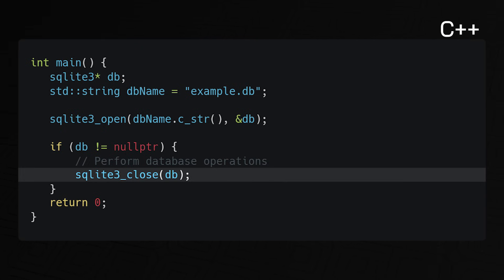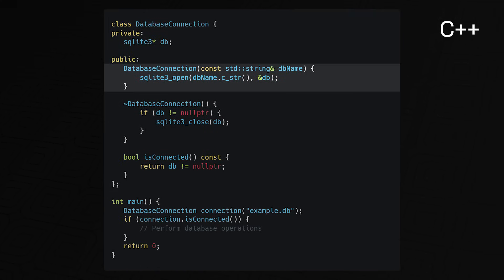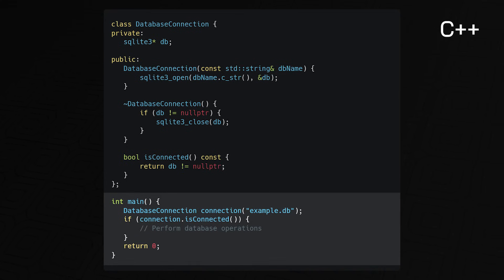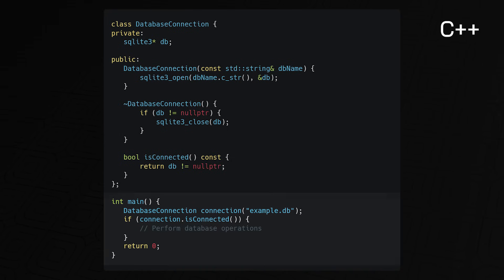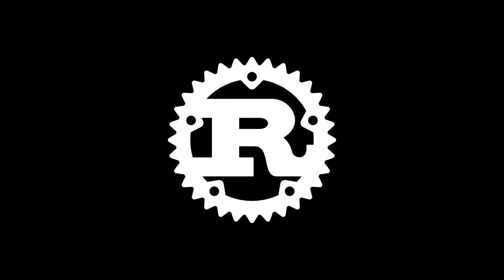Here's the same code using the RAII pattern. We create a class called DatabaseConnection; the constructor acquires the database connection, and the destructor closes it. In main, we simply create an instance of DatabaseConnection, passing in the database name. Because connection is a stack variable, it's deallocated at the end of main, its destructor is called, and the connection is closed automatically. This leads to convenient and reliable resource management, cleaner code, and eliminates resource leaks — which is why Rust integrated it directly into the language.